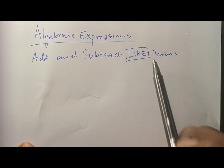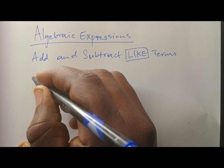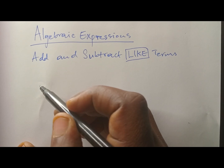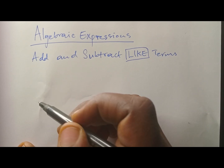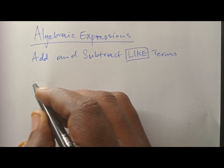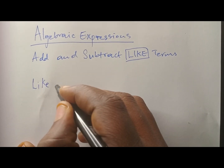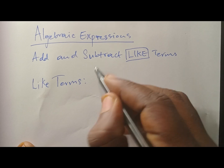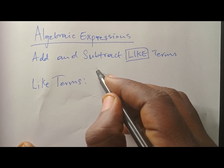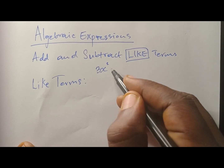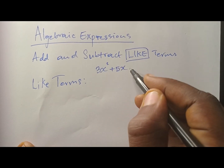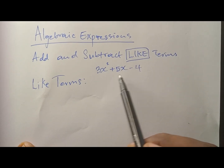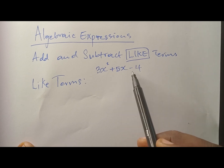Here we are going to add and subtract like terms, but before we do that you need to understand what a like term is. It's very important. You cannot do something when you don't understand what it is. So let's discuss how to identify like terms. Terms are part of an expression — it can be a number. For example: x squared plus 5x minus 4. Terms are separated by plus or minus signs.